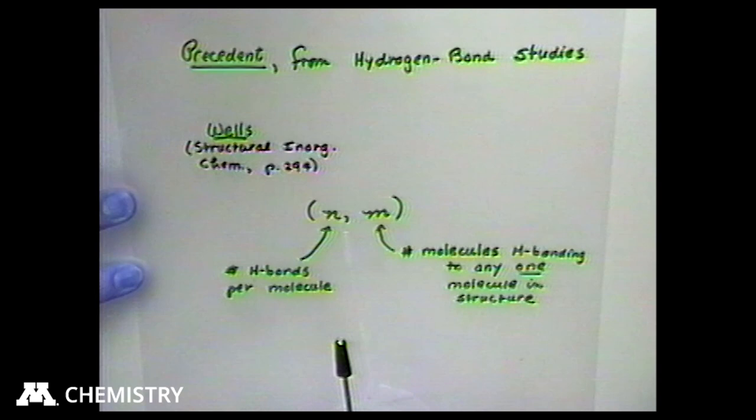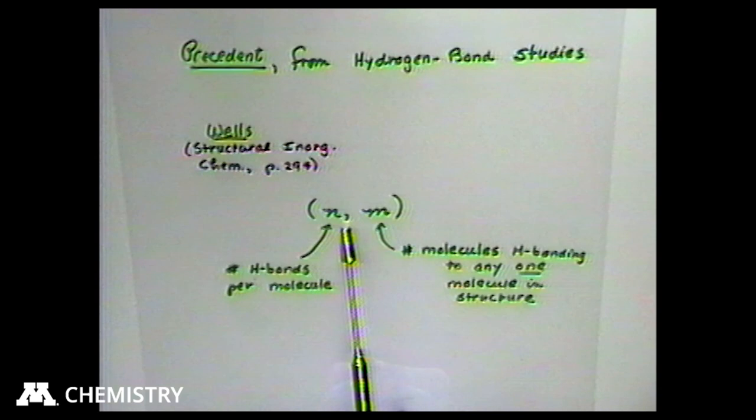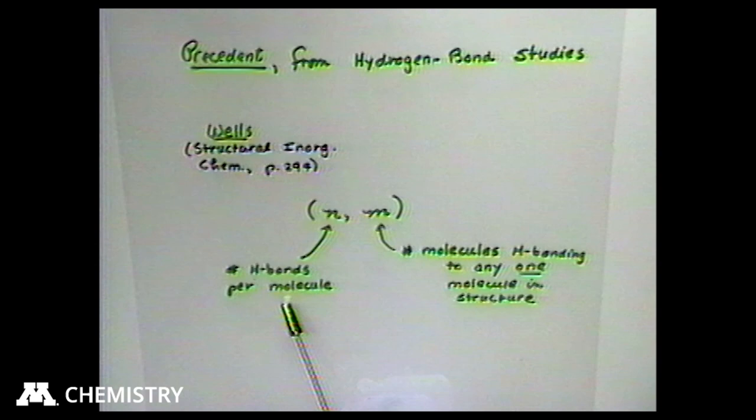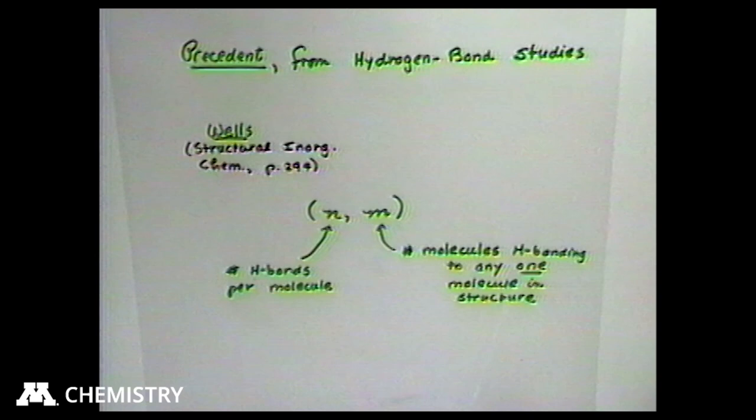There is some precedent for this perspective. Wells, who wrote a wonderful textbook on structural inorganic chemistry, has a notation where he tries to define hydrogen bond patterns using two qualifiers: the number of hydrogen bonds per molecule, and the number of molecules bonding to any other molecule. Those two descriptors — that's a pretty good start on defining what's happening to a molecule in the solid state.